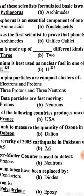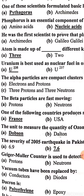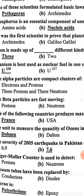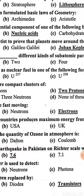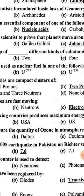Phosphorus is an essential component of nucleic acid. He was the first scientist to prove that planets move around the sun — John Kepler.